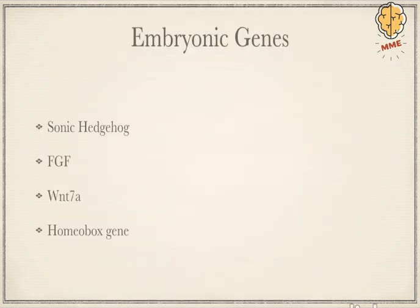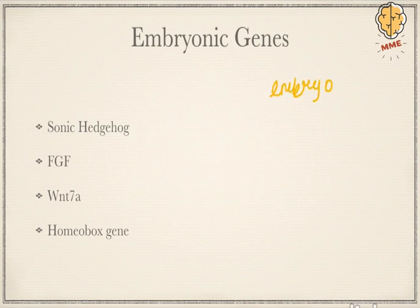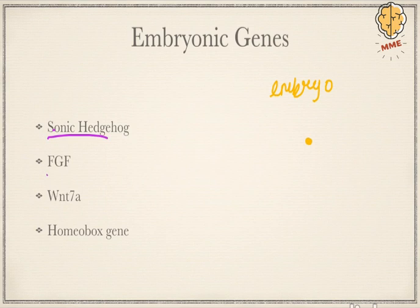For the embryology section, we will start with embryonic genes. Whenever an embryo is formed, various genes are required for the development of the body in a particular direction. The important genes are the sonic hedgehog, FGF (fibroblast growth factor), WNT7A, and the homeobox gene.